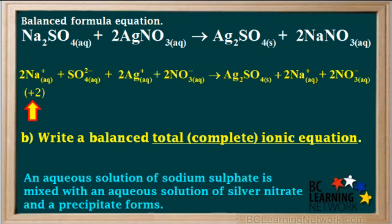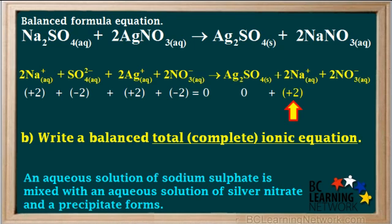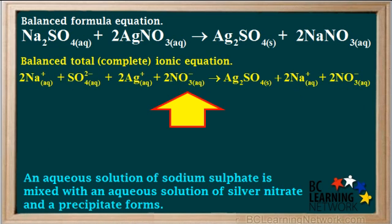We'll start on the left side. The total charge on two Na+ ions is +2. The total charge on one sulfate ion is -2. The total charge on two Ag+ ions is +2, and the total charge on two nitrate ions is -2. So all the charges on the left side add up to zero. Now on the right side: there are no charges shown in the Ag2SO4, so its charge is zero. Two Na+ ions have a charge of +2, and two nitrate ions have a charge of -2, so the total charge on the right side is also zero. This means charges are balanced. It would also be good to check that all atoms are balanced. So we've now completed and checked the total ionic equation.